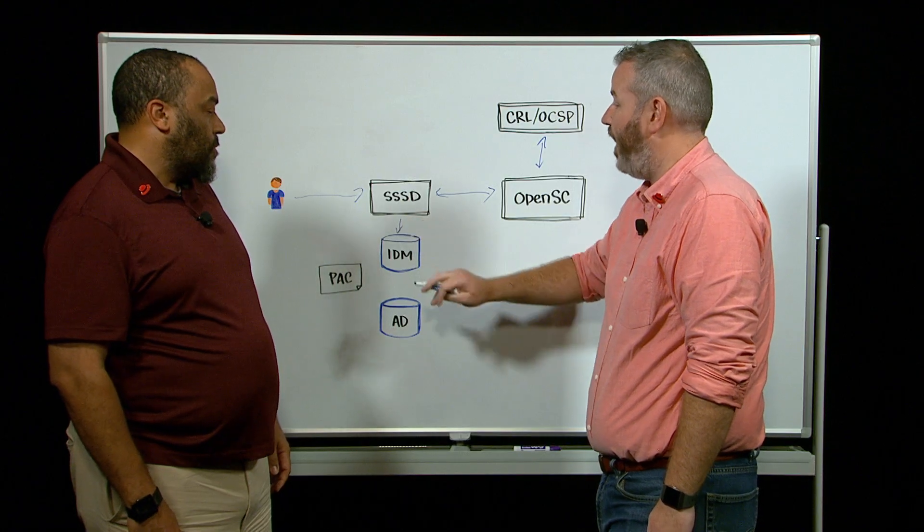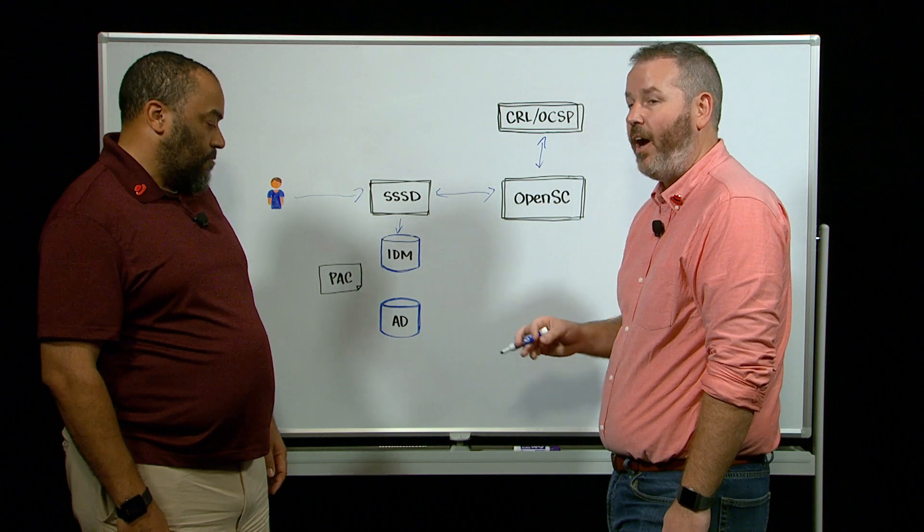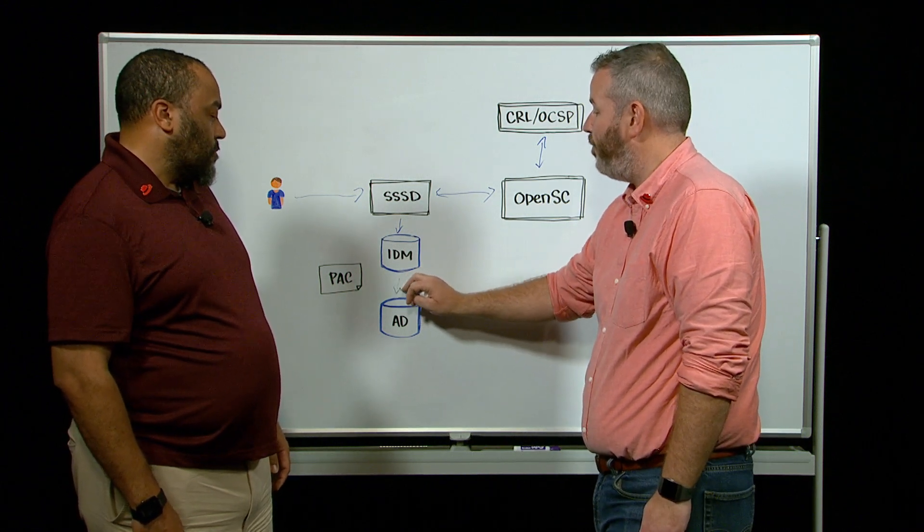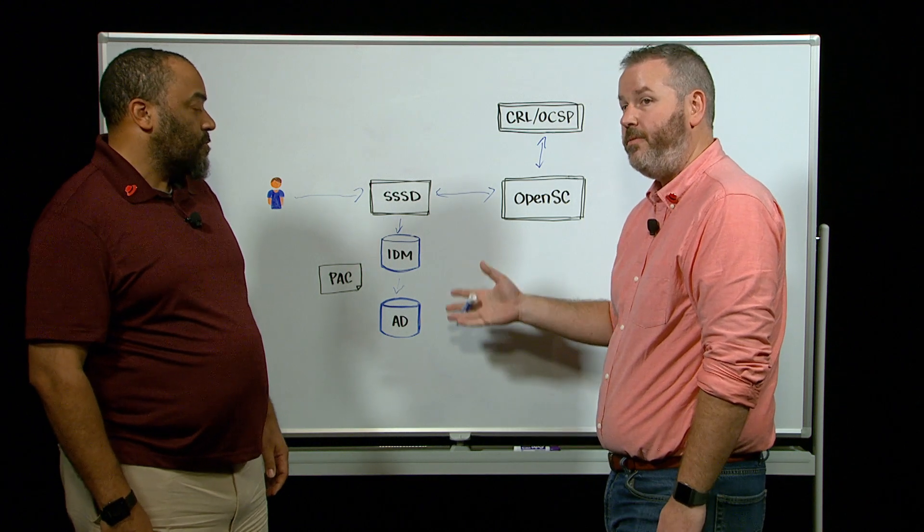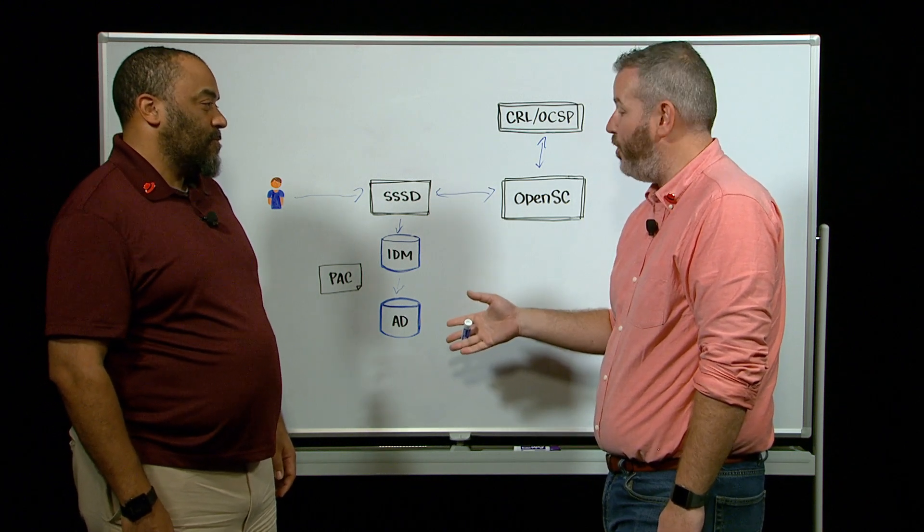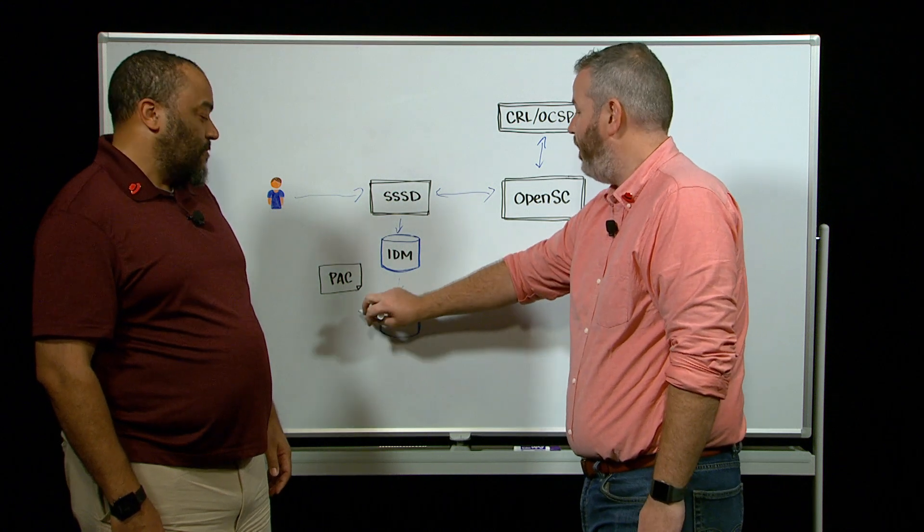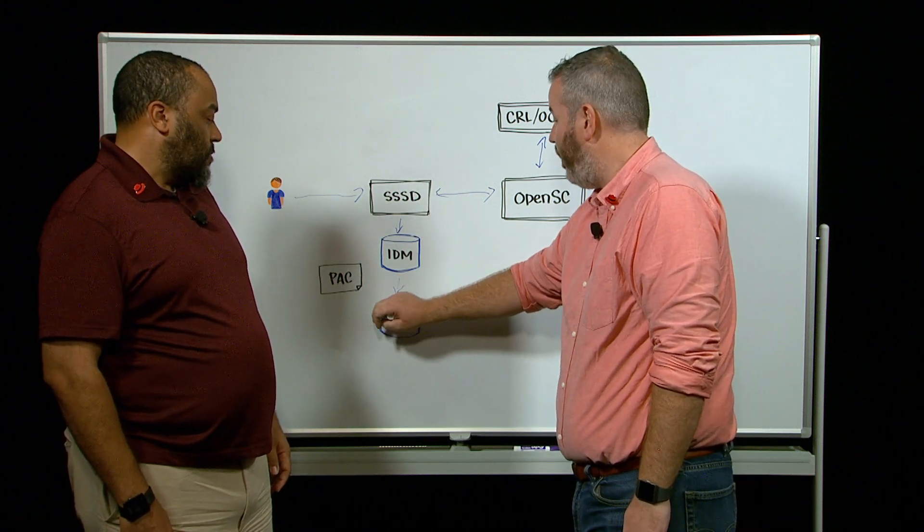Once that has come back, that the certificate hasn't been revoked and it's not expired, OpenSC is going to pass a successful authentication message back to SSSD. SSSD is then going to take that and pass that on down to IDM, and IDM is going to say, I don't have that user, let me ask Active Directory. So via the one-way trust, IDM is going to ask Active Directory for the user. Active Directory is going to say, yes, I have this user, and they are not otherwise prohibited from logging in.